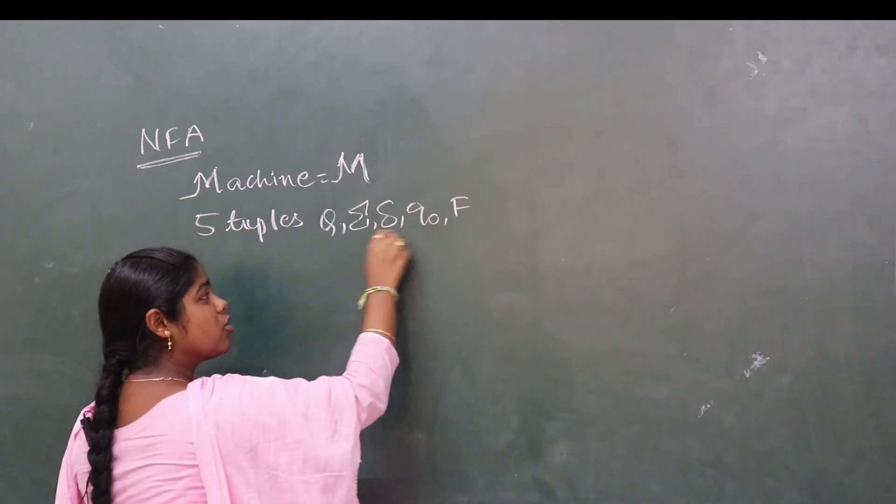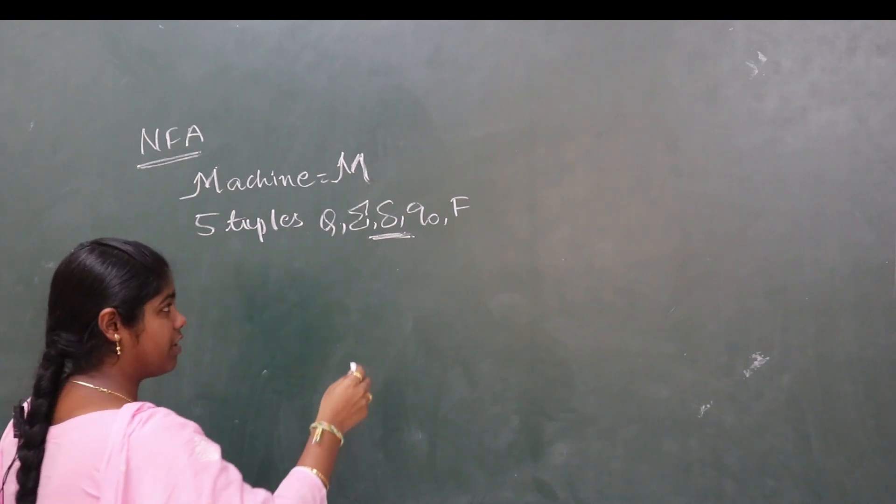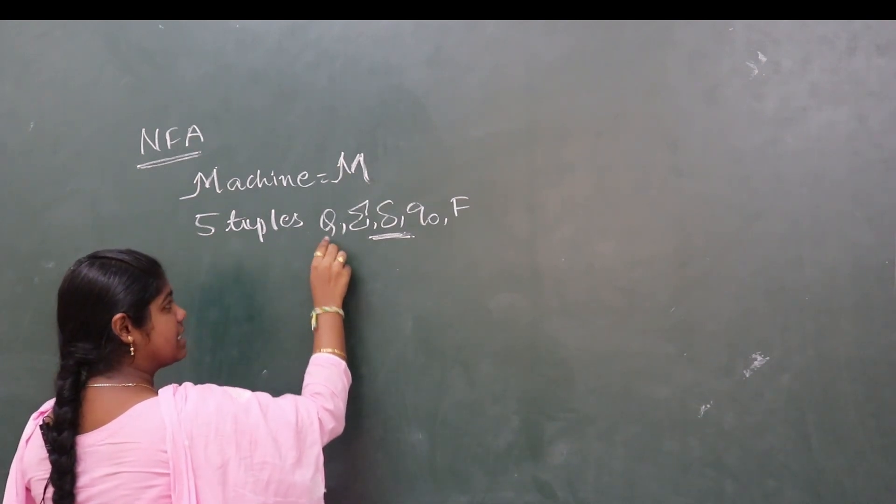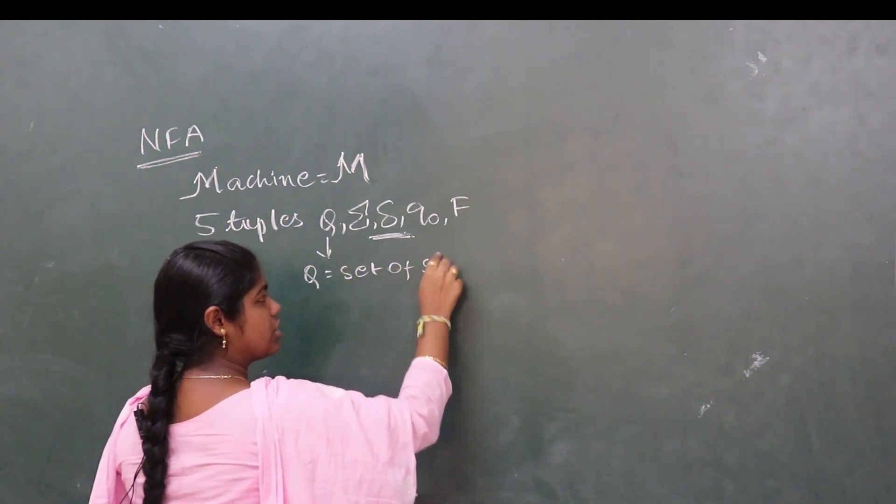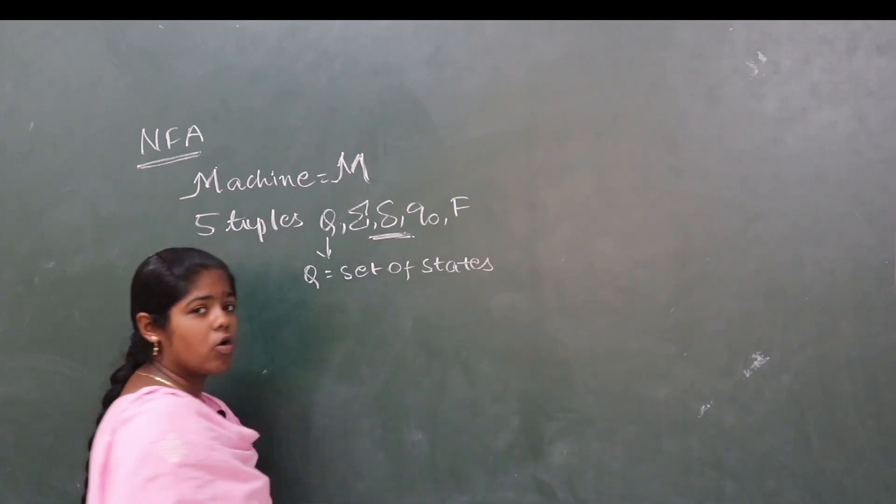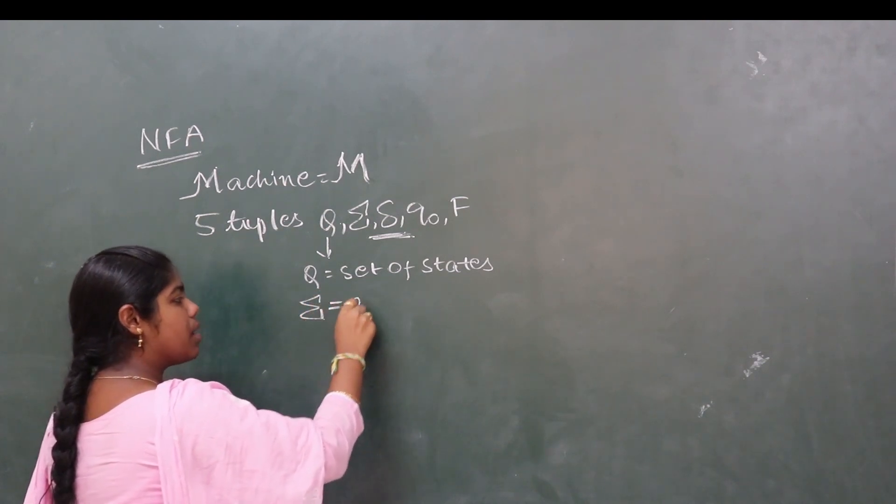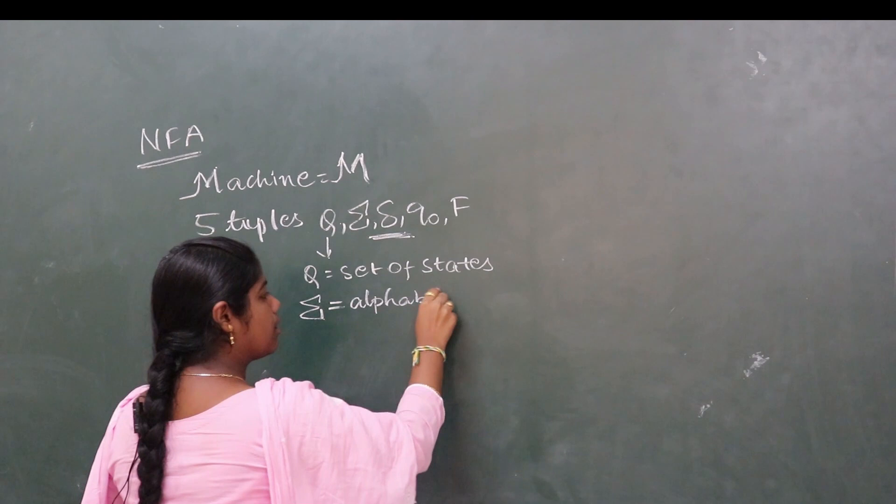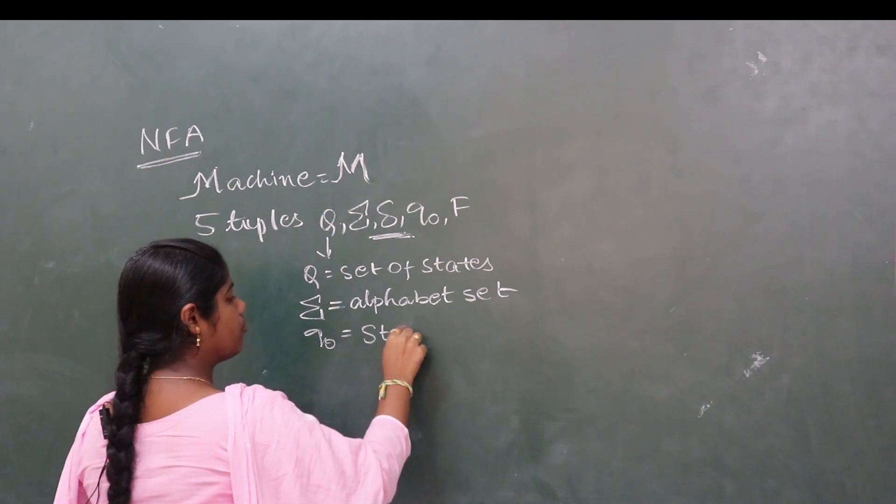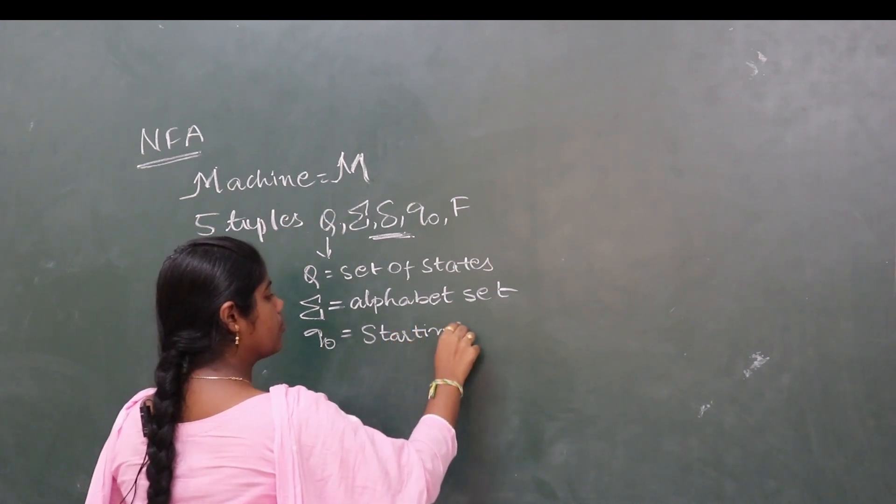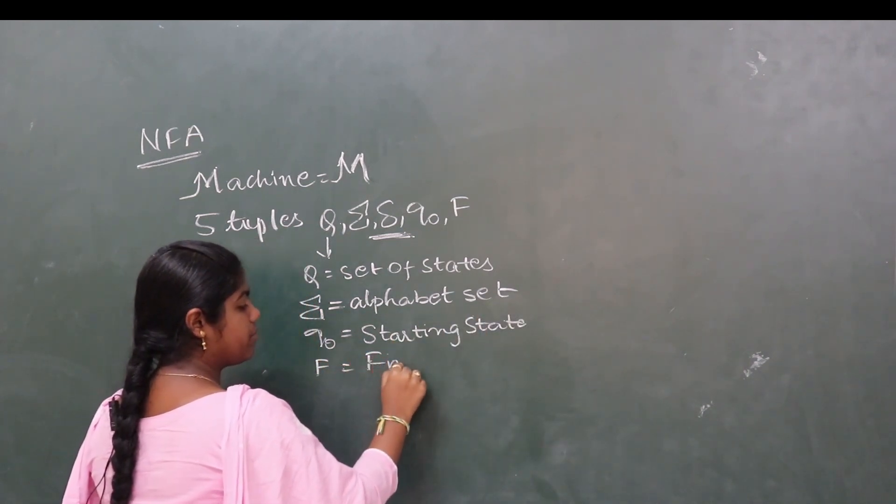The difference between deterministic and non-deterministic finite automata is in the transition state. Q is the set of states, sigma is the alphabet set, Q0 is the starting state, and F is the final state.